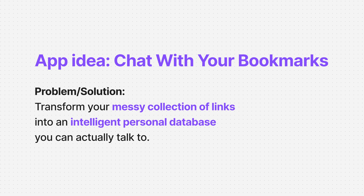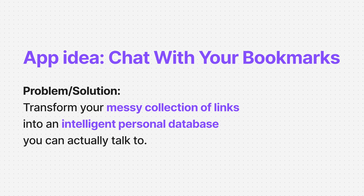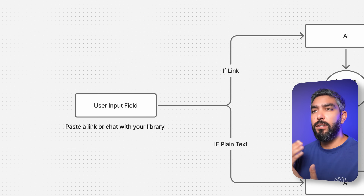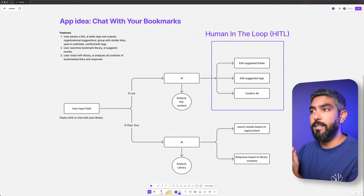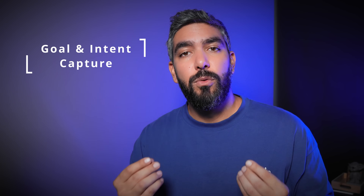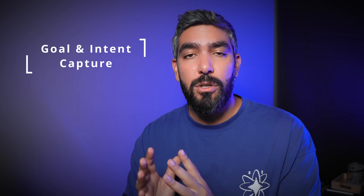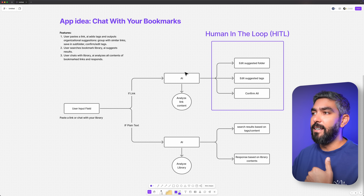The app we're going to create today solves the problem of having a messy collection of links and transforms them into a smart library that you can chat with. The intention is to have a very simple UI with just one text input field, where the user would enter either a link or plain text. The N8N automation will figure out if it's a link or plain text and perform the associated workflow. So the first job of any agent is to understand what the user wants. We built one input source that intelligently routes the user intent. This if-node is the agent's first decision. If it is a link, AI will analyze the link content, give suggested tags, and organize it based on the contents. An agent that works in a black box is untrustworthy, so here our agent shows its work by presenting a summary and suggested tags, explaining how it interpreted the content. This builds trust and gives the user a chance to correct the agent's understanding.